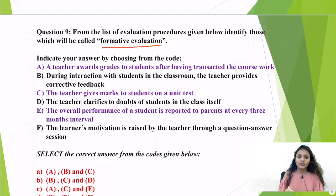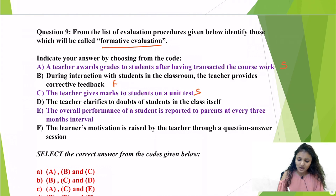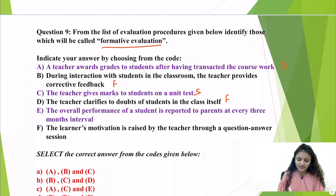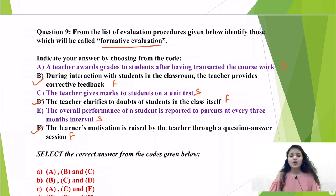Analyzing the options: A — a teacher awarding grades after completing coursework is summative. B — a teacher providing corrective feedback during classroom interaction is formative. C — giving marks on a unit test is summative. D — a teacher clarifying doubts in class is formative. E — reporting overall performance to parents every three months is summative. F — raising learner motivation through a question-answer session is formative. So formative evaluation options are B, D, and F, making the correct answer option D.